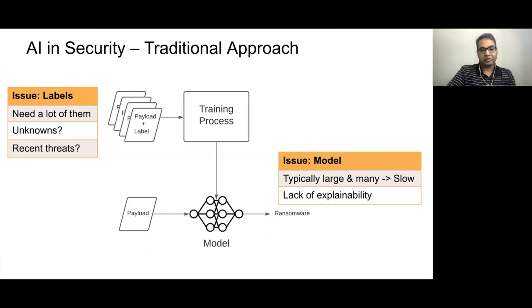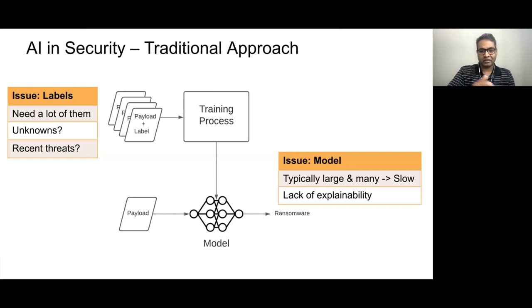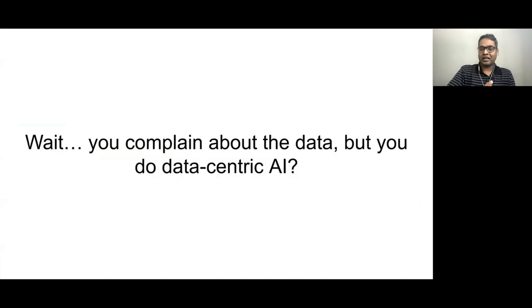Explainability is very important in security because you're taking somebody's laptop and saying 'I'm going to format it because you have something bad in it' — that significantly affects productivity. So before taking that action, the security analyst has to be sure there's something really bad there. So at this point you might be thinking: you're talking about data-centric AI but you're starting by complaining about data. How do you do data-centric AI for security?